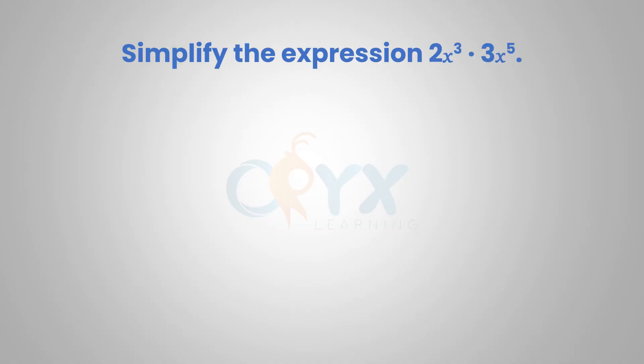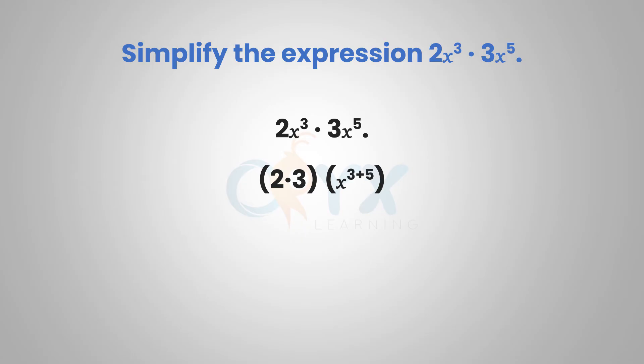Simplify the expression 2x to the 3rd times 3x to the 5th. When we multiply monomials, we can first multiply their coefficients, and then use our property to multiply like bases by adding the exponents. The coefficients are 2 and 3, so we multiply those together: 2 times 3. The bases are x to the 3rd and x to the 5th, so we add the exponents 3 plus 5, and we get 6x to the 8th.